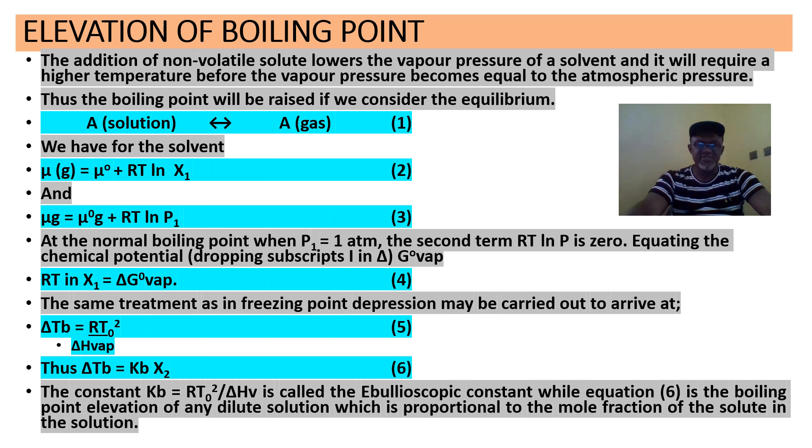Elevation of boiling point. Now we are going to be very fast because this is exactly the same thing we did. The only difference now, you can see in terms of boiling point, once the vapor pressure is lowered, then the boiling point will have to increase because we'll have to heat our solution further. So the same equation here, again, solution and gas. We'll have the chemical potential, that is equation 2.